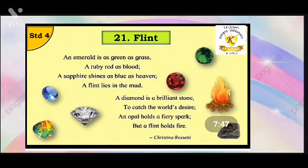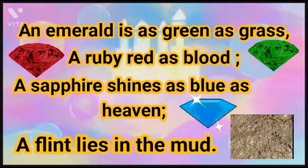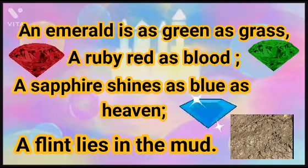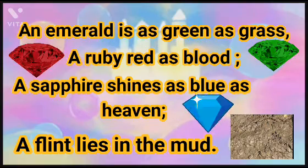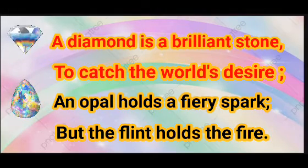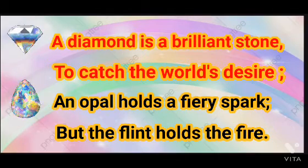Now let's recite the poem. Kindly pay attention and underline the new words. An emerald is as green as grass, a ruby red as blood, a sapphire shines as blue as heaven, a Flint lies in the mud. A diamond is a brilliant stone to catch the world's desire, an opal holds a fiery spark, but a Flint holds fire.